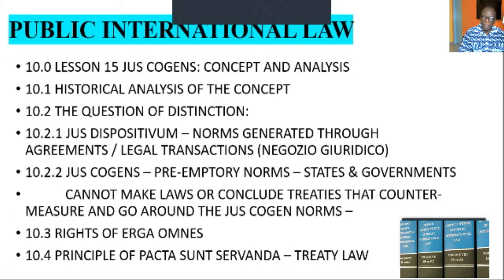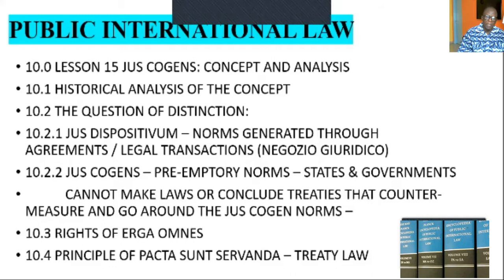Lesson number 15 is about the concept of jus cogens. I say jus cogens simply because it is a derivative from Latin. However, the pronunciation by Black's Dictionary is just 'cogens.' It is a very important doctrine and principle in international law — a newly emerging but nebulous concept in international law as theory as well as practice. But what is jus cogens? How do we understand it in its application in the international legal system?